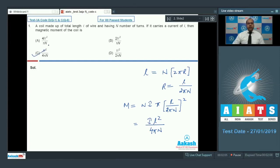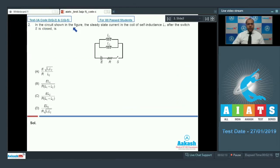Let's move to question number 2. In the circuit shown in the figure the steady state current in the coil of self inductance L1 after the switch S is closed is. So when the switch S is closed then let at any time T the current in this is I1 and the current in this is I2. Since the potential difference between these two points will remain same as well as across this inductor.